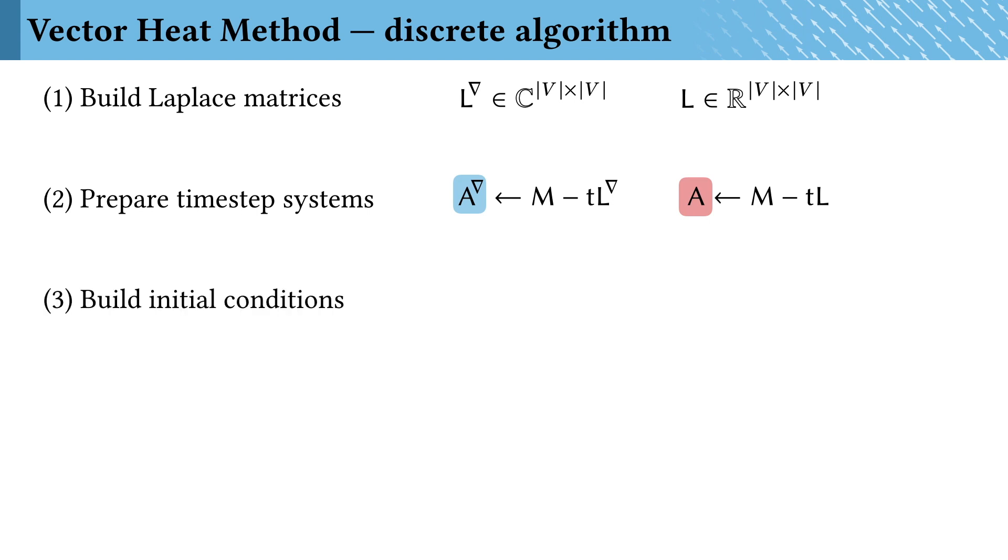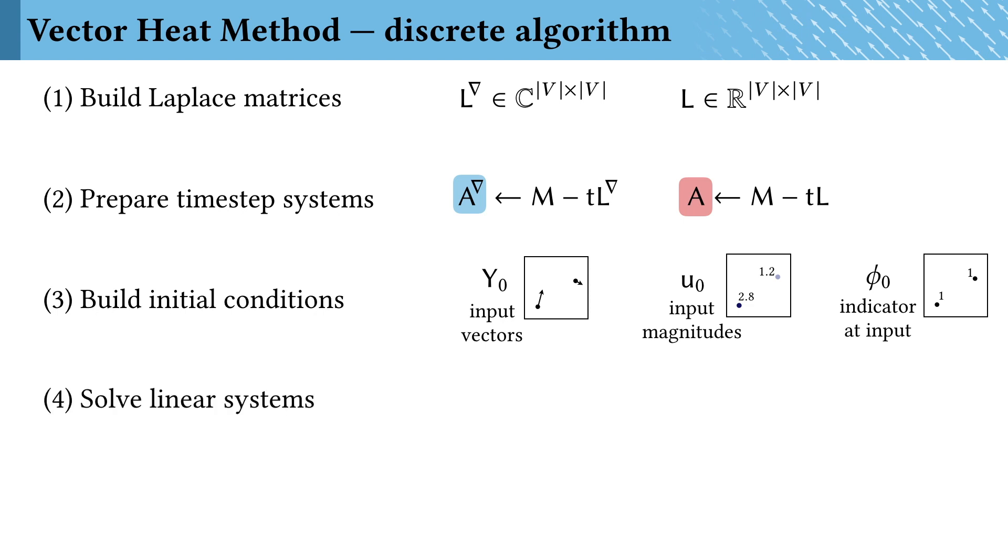Then for any input data, we build initial conditions, which are the input vectors, the magnitudes of the input vectors, and indicator functions at the input locations. Then we solve linear systems to evaluate the three heat flow problems: one vector heat flow and two scalar heat flows. Finally, we combine these results to scale the vectors at each node and yield the output result.